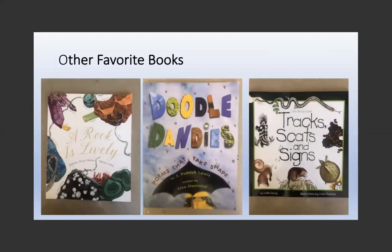Favorite books - pull them out, use them, share them. You can even read them aloud - story time did not go away, you can do that remotely. This is I Rock is Lively, with beautiful illustrations by Diana Hutz Aston and Sylvia Long. Even the front identifies different types of rocks and minerals. About the third page in it says: 'A rock is mixed up. All rocks are made of a mix of ingredients called minerals. Just as a batter of flour, butter, and sugar makes a cookie, a batter of minerals makes a rock.' It talks about recipes and so forth.